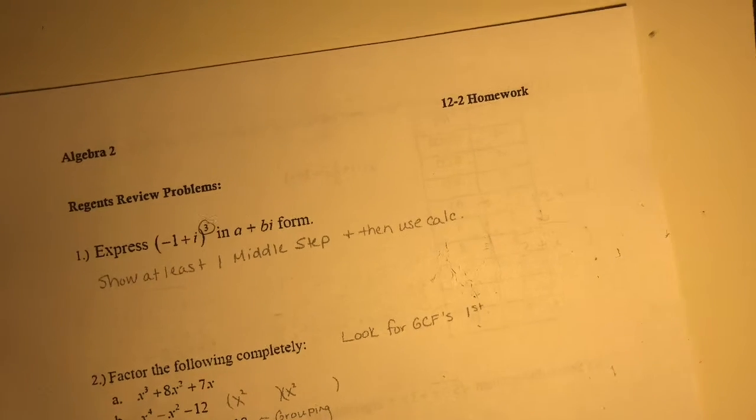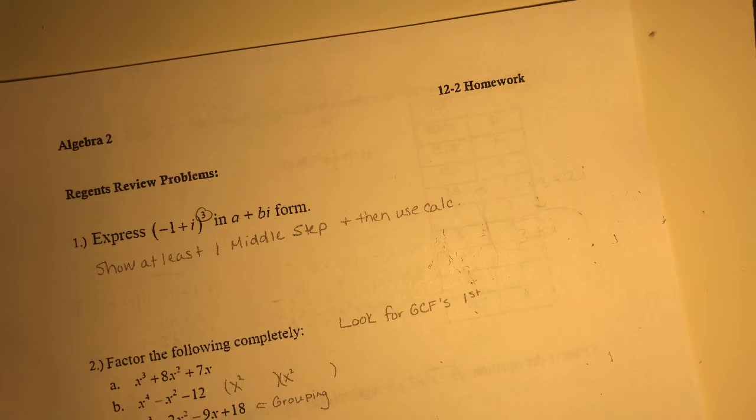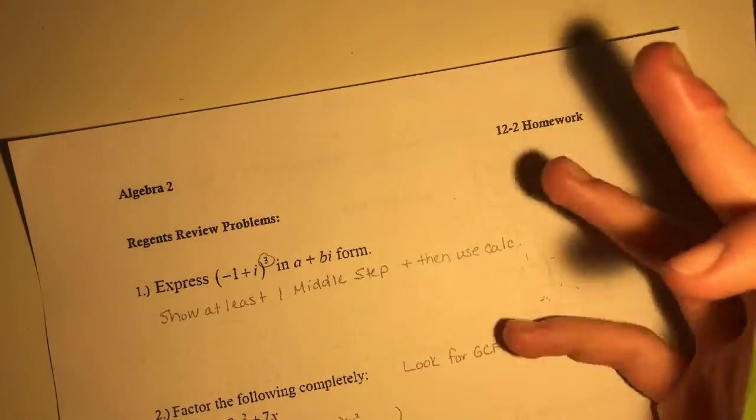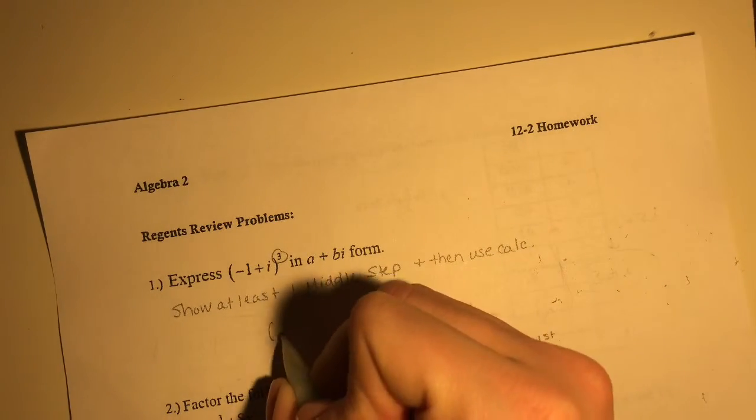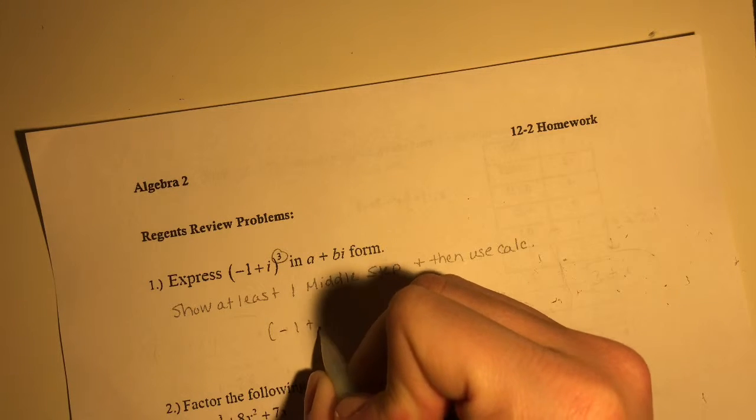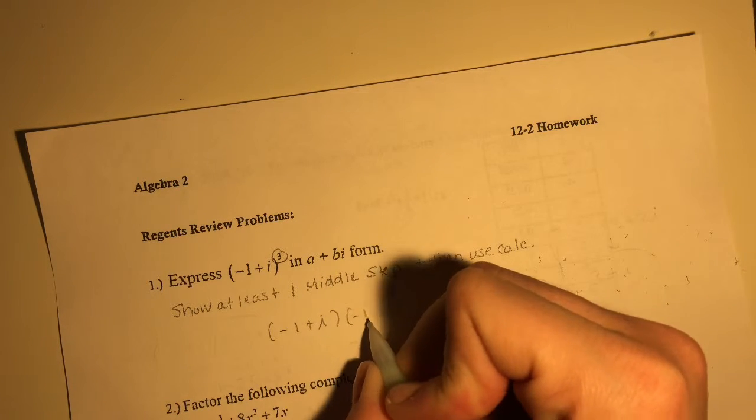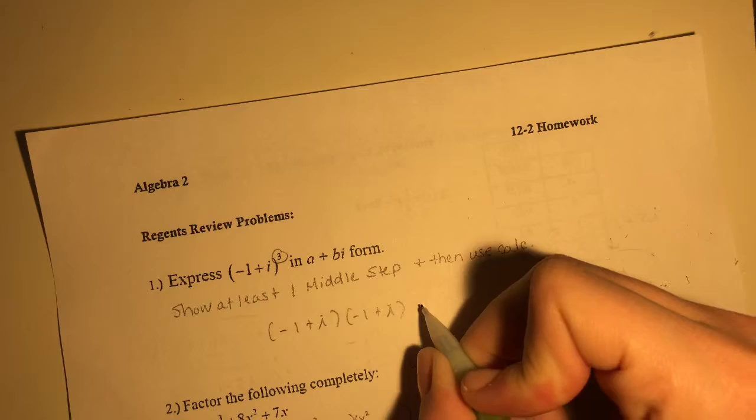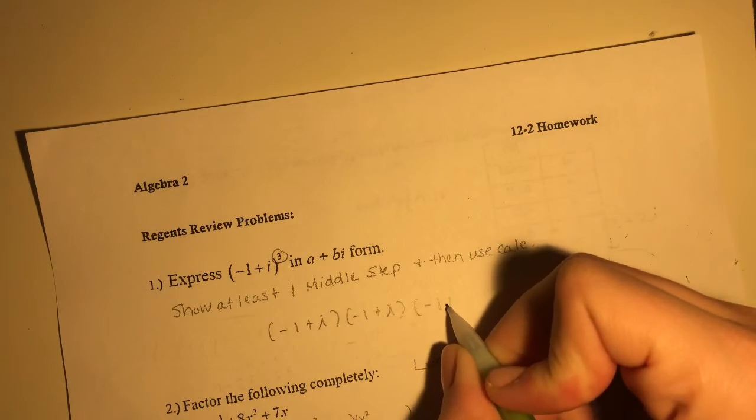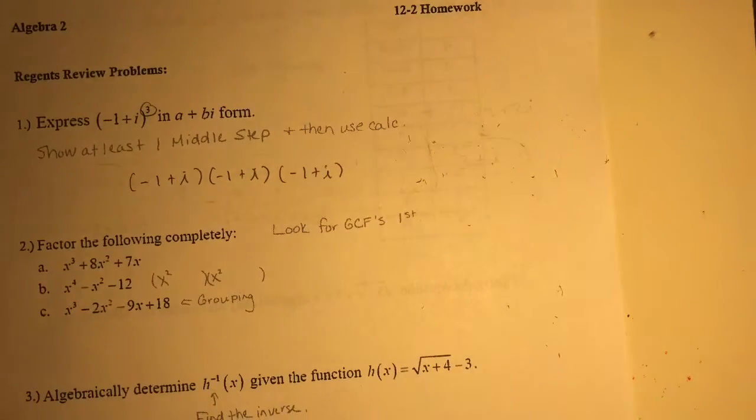Okay, so number one: express (-1+i)³ in a+bi form. Let's show at least one middle step then use the calc. So let's just write (-1+i) times (-1+i) times (-1+i). And then we can use our calc on this.